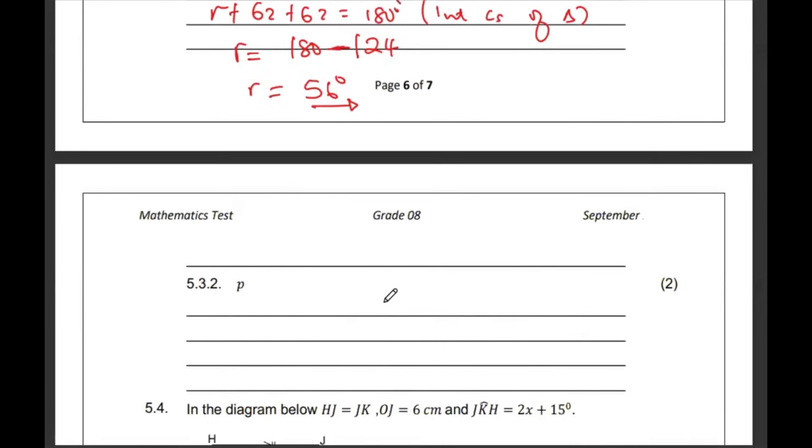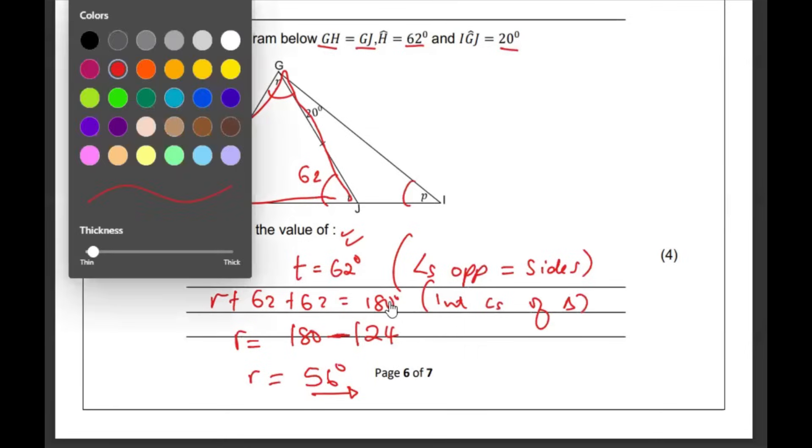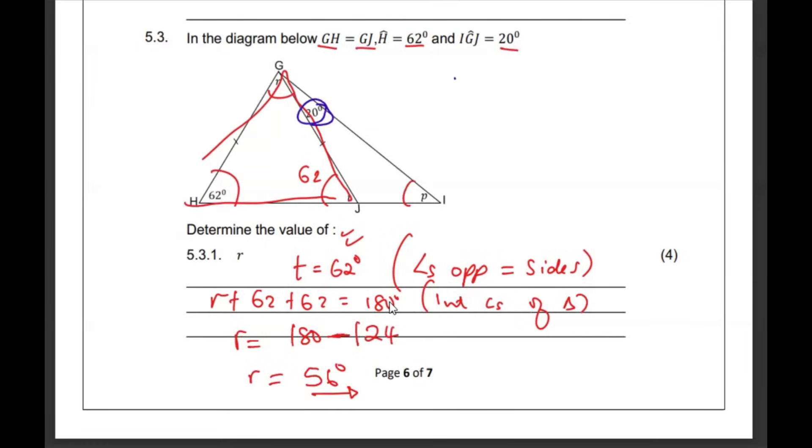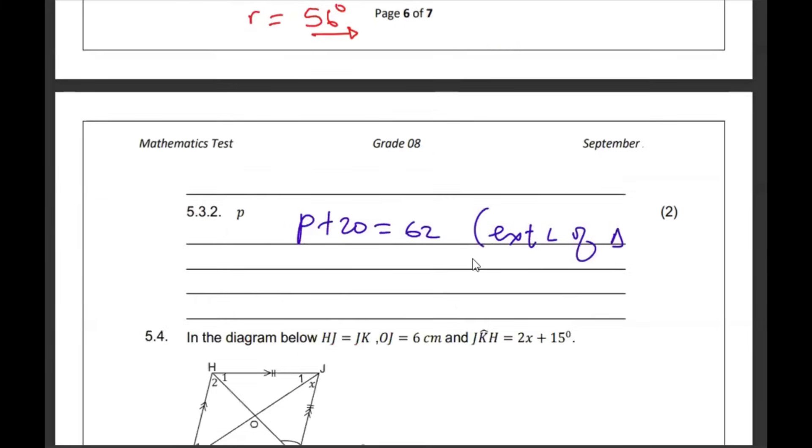Then, they want the size of P. So, what do we know about P? Is that P and the 20, this 20 here and the P should be equivalent to that angle so that it is exterior to that small triangle. So, I'm going to say P plus 20 must give us 62 exterior angle of a triangle. Then, I just need to transpose and subtract 62 minus 20, which becomes 42.